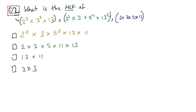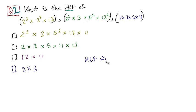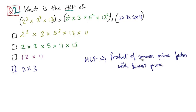Time for question number 2. It's the same as the previous question — the only thing is that you have to find the highest common factor of these three numbers. The first step to find the HCF by the method of prime factorization is to find the prime factors of each of the numbers. That step is already done for you. By the method of prime factorization, HCF is equal to the product of common prime factors with the lowest power.